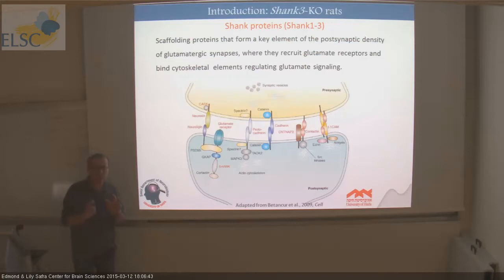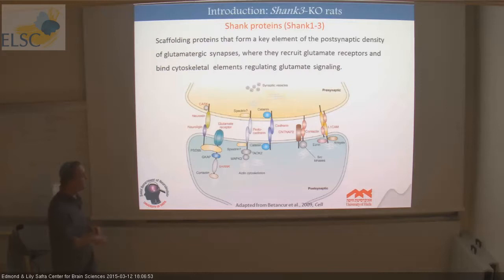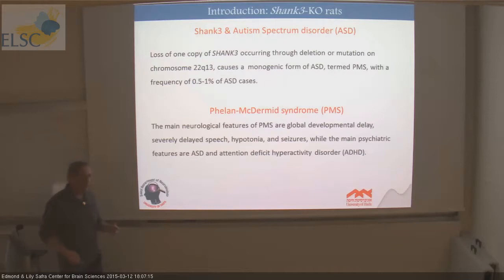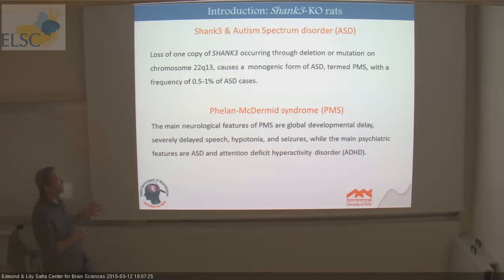I want to show briefly what happened in a Shank3 knockout rat model. Shank3 is a scaffolding protein active in glutamatergic synapses throughout the brain, expressed specifically in areas like the amygdala, medial prefrontal cortex, hippocampus, and striatum. Mutation — haploinsufficiency — in Shank3 is a monogenic form of autism spectrum disorder. Between 0.5 to 1% of ASD cases are Phelan-McDermid Syndrome (PMS), caused by Shank3 haploinsufficiency in humans.